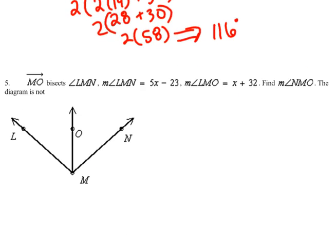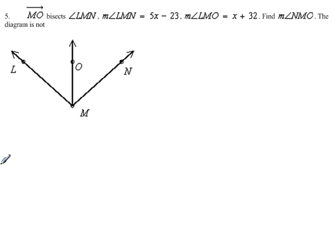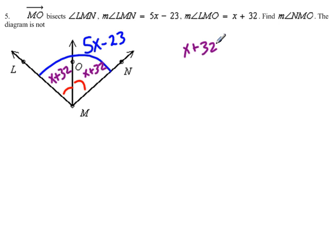Number five. Very similar except it's asking us for some more info or a different piece of information. Once again, MO bisects angle LMN. This time we're told that the whole angle of LMN is 5x minus 23, and then we're told that LMO is x plus 32. Well, if this is x plus 32, guess what, this one also is x plus 32. And if I add those two together by angle addition postulate, I will get the whole thing. And of course I don't have to write them twice since they're both the same. I can double it, multiplying it by 2, will equal 5x minus 23.